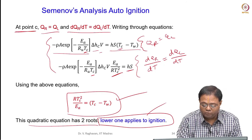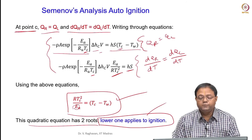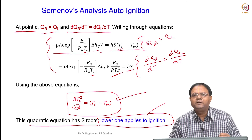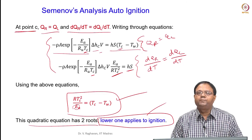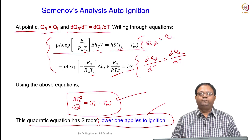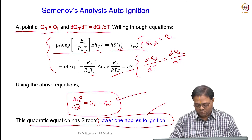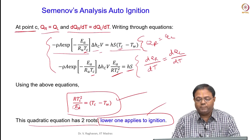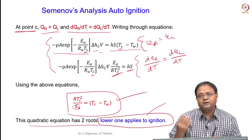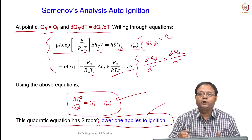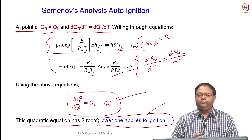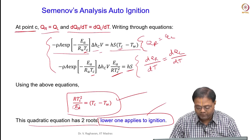Proper choice of EA value and other parameters is required. Normally we cannot get accurate auto-ignition temperature unless we go for a detailed mechanism — we cannot just use a one-step mechanism, but this is the concept behind that. The heat which is generated should at least match the heat loss to cause ignition; if it is less than that, the system will cool down. This is the Semenov analysis of auto-ignition.